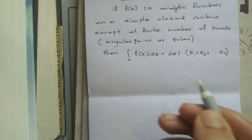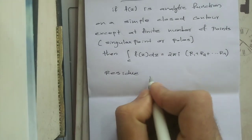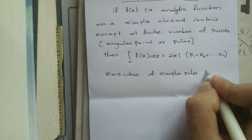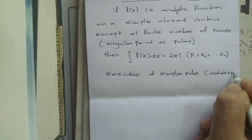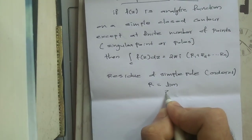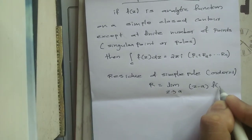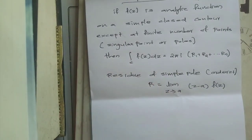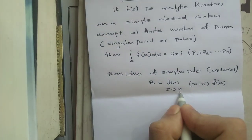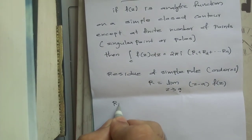First, we will look at the residue of a simple pole — that is, a pole of order 1. The residue is given by the limit as z tends to a of (z − a) · f(z), where f is the function and a is the singular point — the point at which the function is not defined.